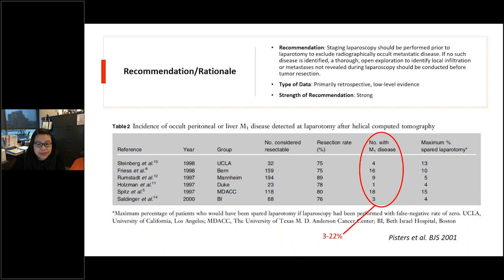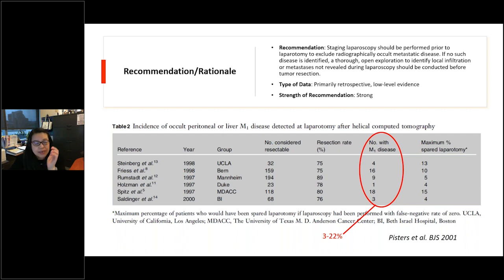Obviously, if metastatic disease is discovered, patients are spared a laparotomy that has no curative intent. The recommendation for staging laparoscopy is largely based on retrospective data, but the strength of the recommendation is quite strong. In the literature, positive laparoscopy rates range from four to 20 percent.